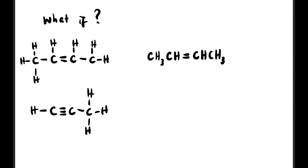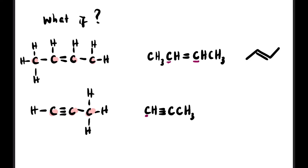For C triple bond C, same approach: CH at each end with a triple bond. In condensed: CH3-C≡C-CH3 for example. For skeletal with 3 carbons: draw 1-2-3, and between carbon 1 and 2 add triple bond lines. That's how you draw skeletal structures with multiple bonds.